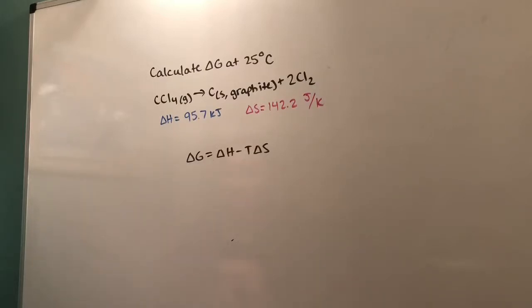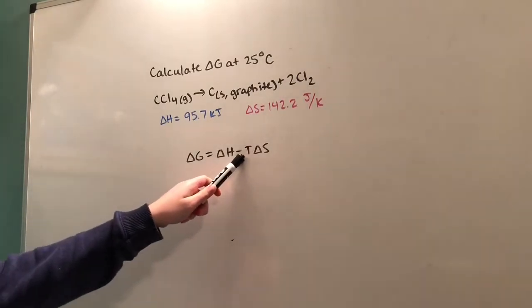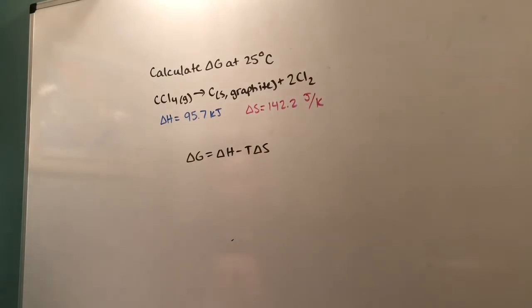Today we're going to calculate ΔG at 25°C for the decomposition of carbon tetrachloride gas. We're given this formula: ΔG = ΔH - TΔS.